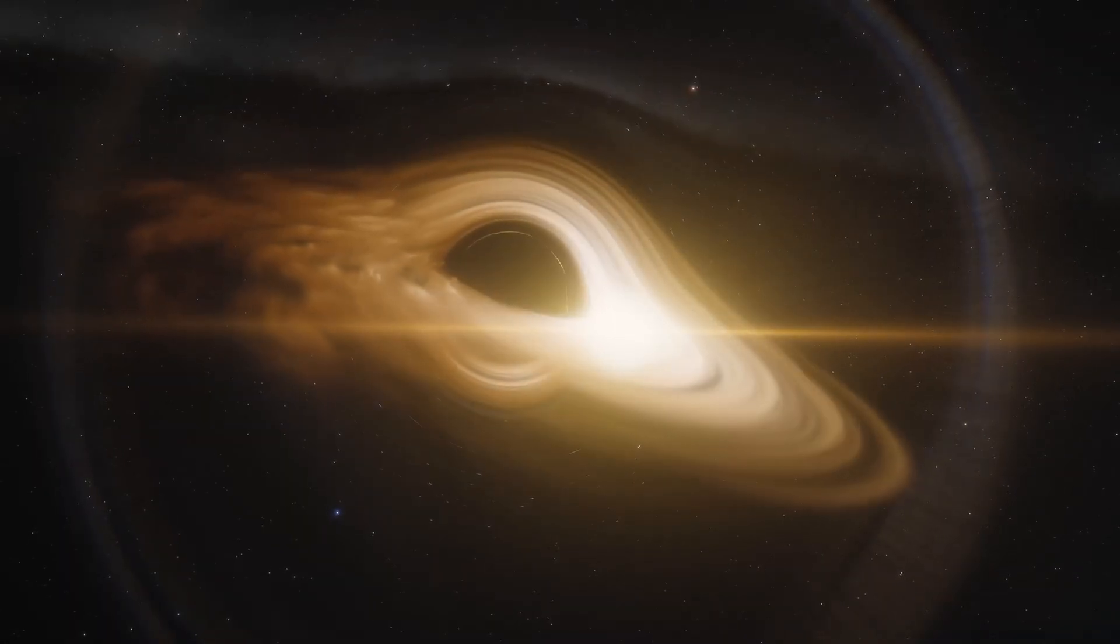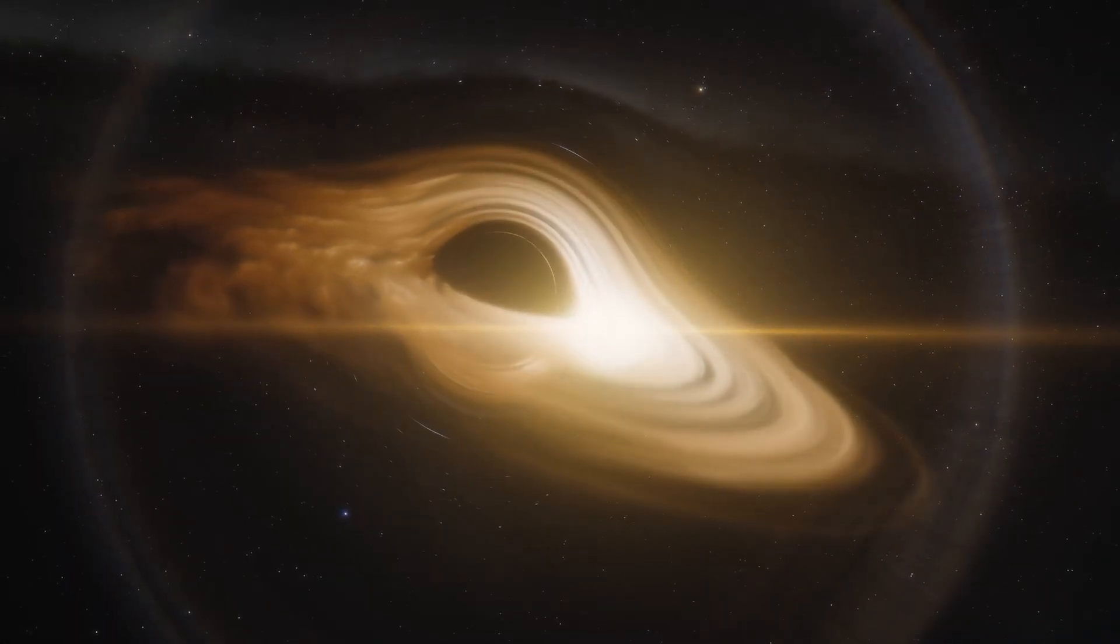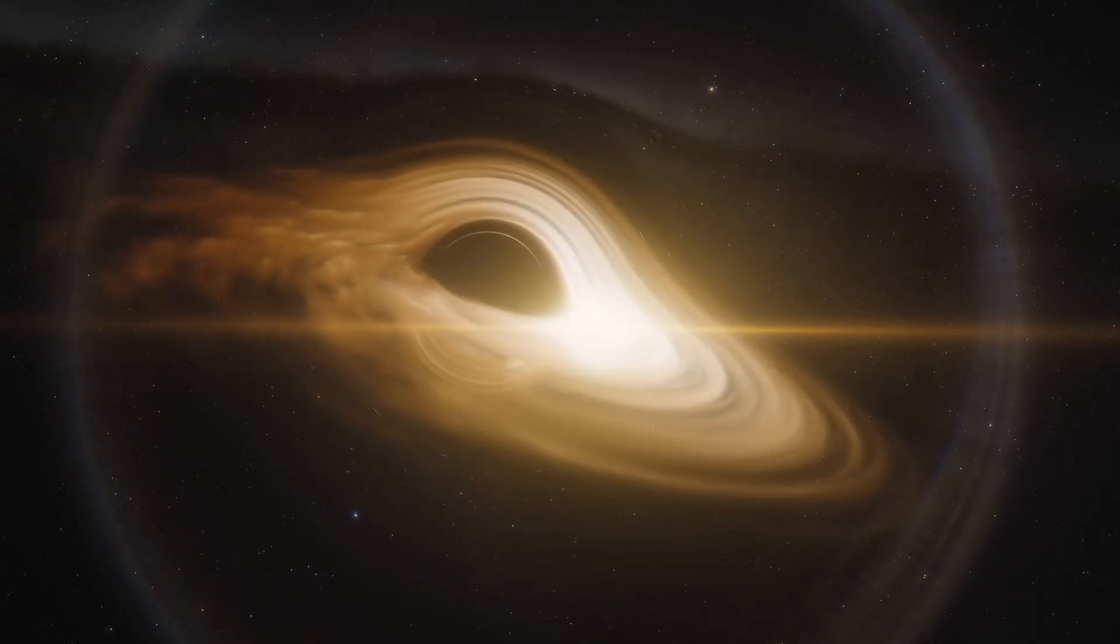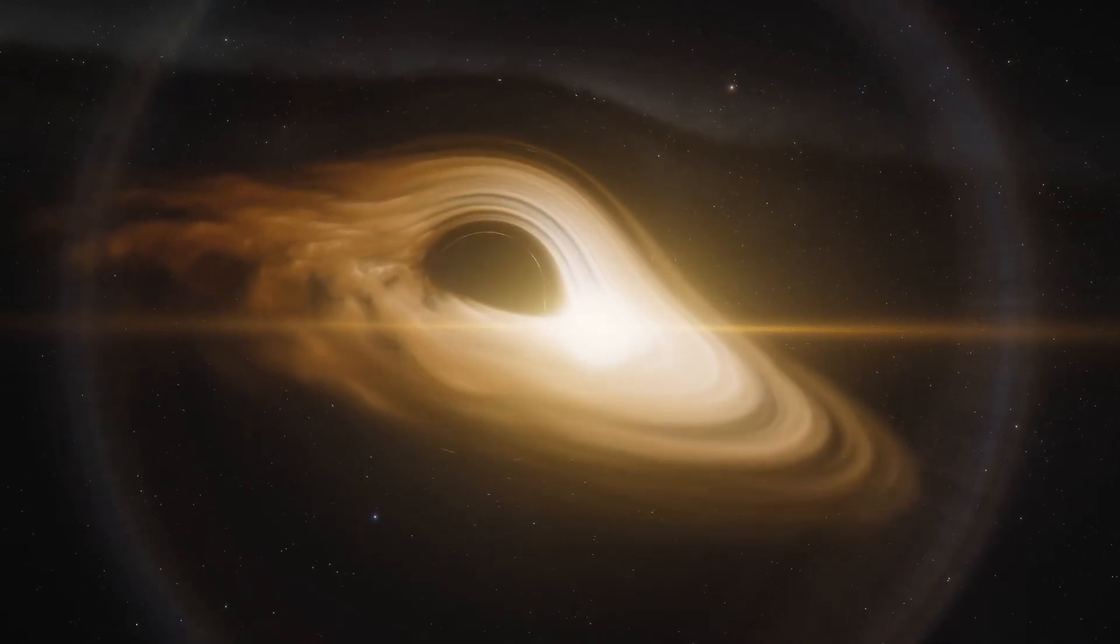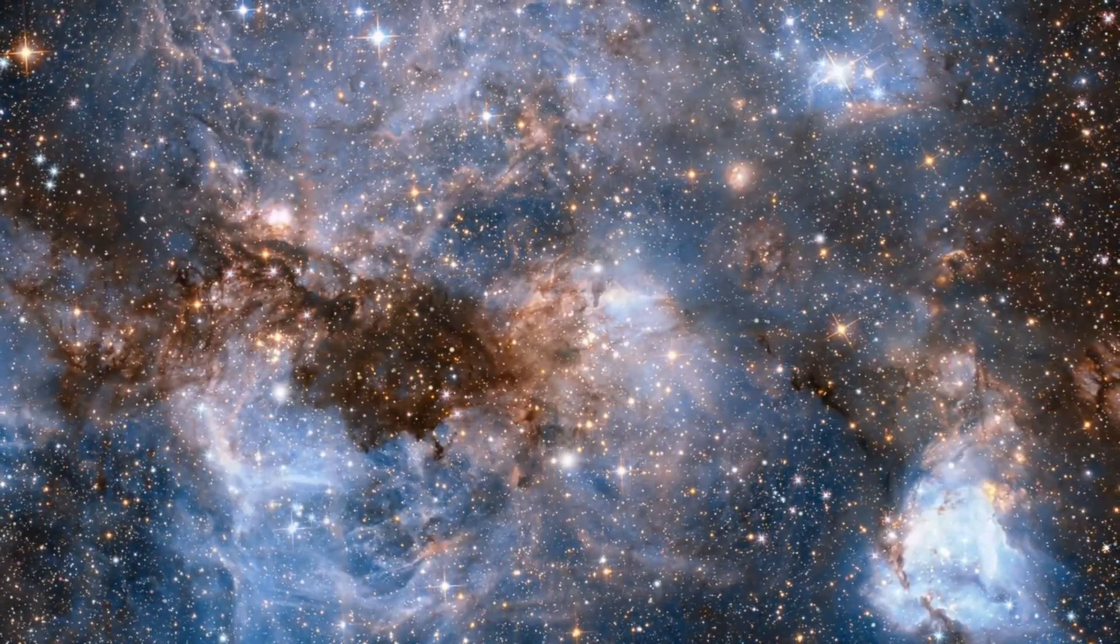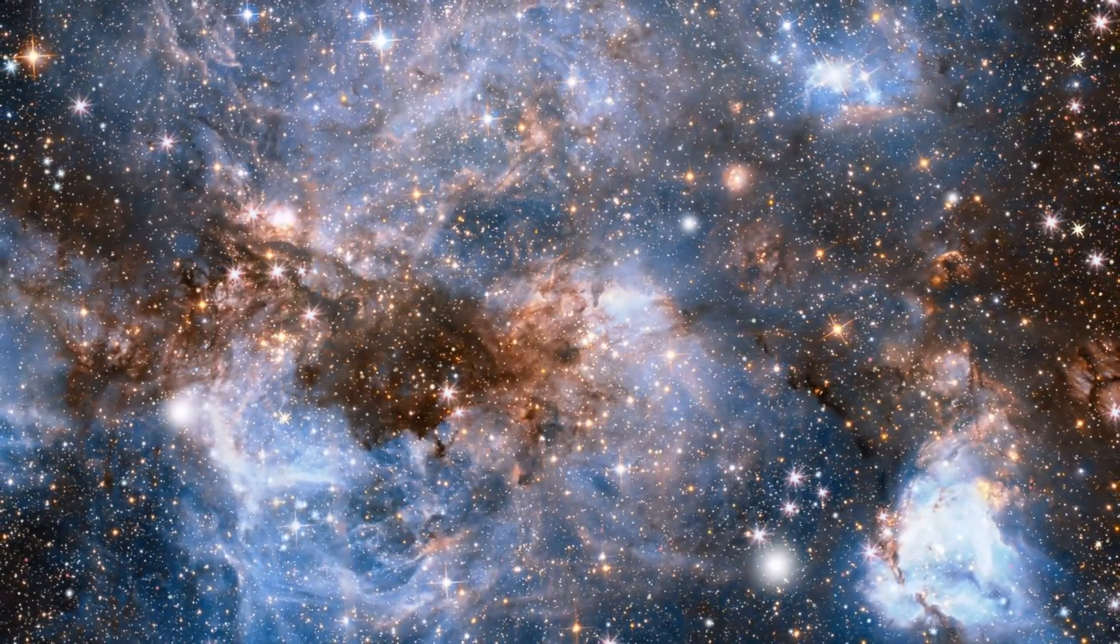But this process is unbelievably slow. A star-sized black hole needs a number so large it barely qualifies as a number—a one followed by 67 zeros—to fully evaporate. Primordial black holes, if they still exist, would sit right on the edge of that limit.